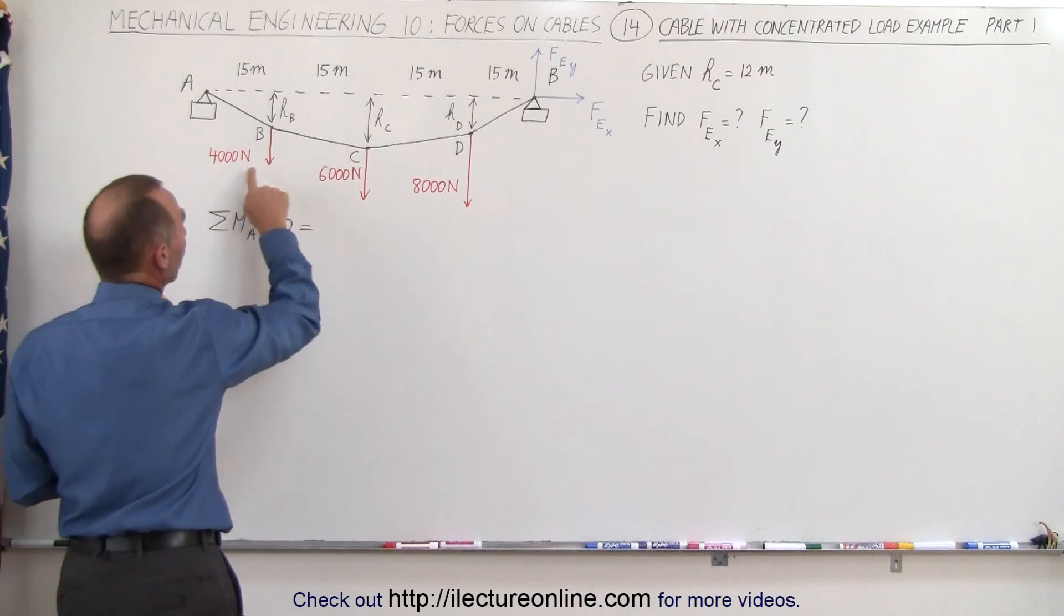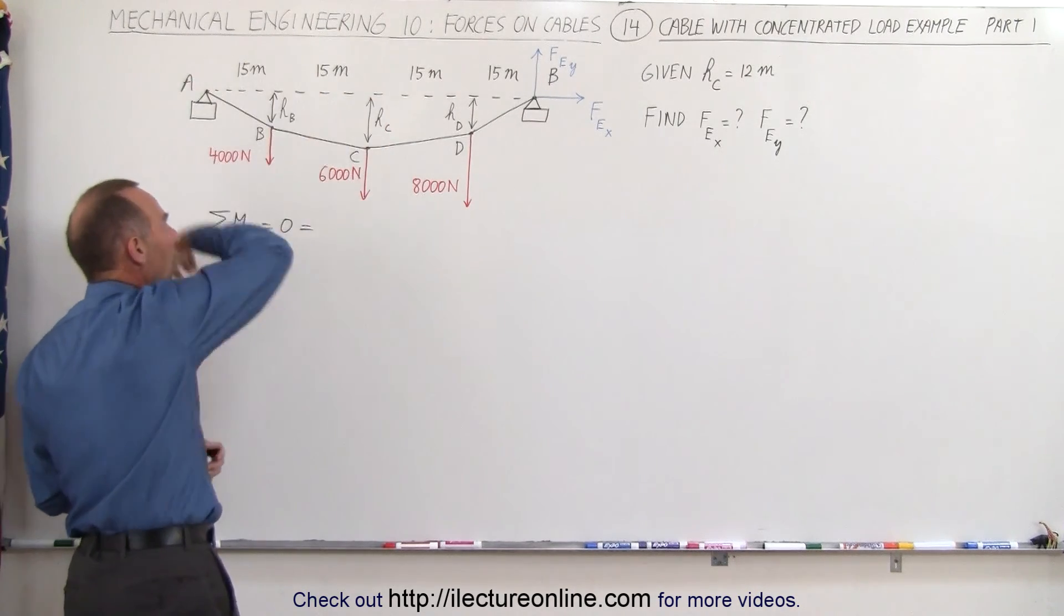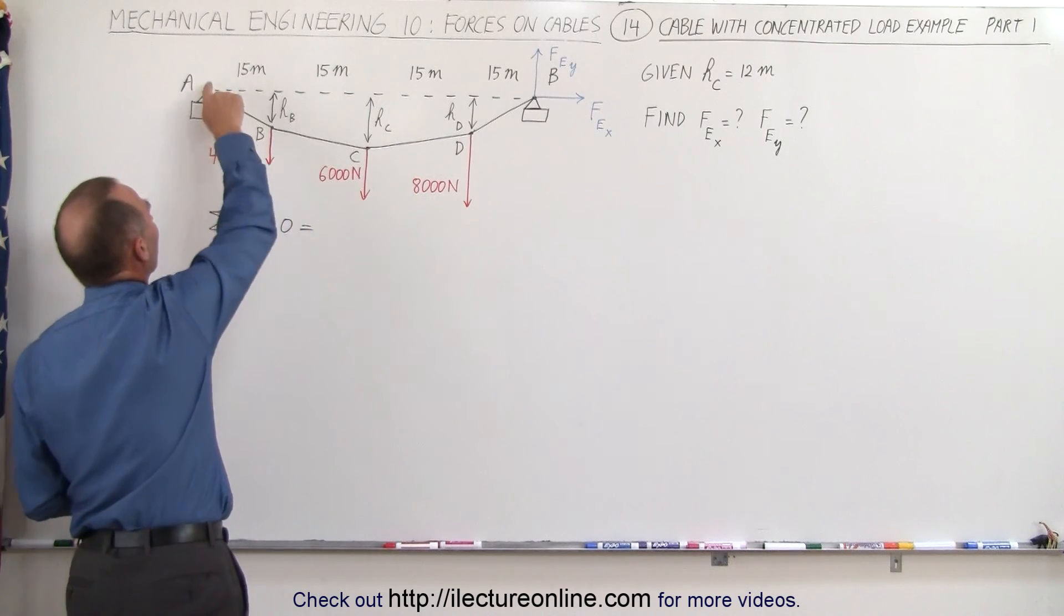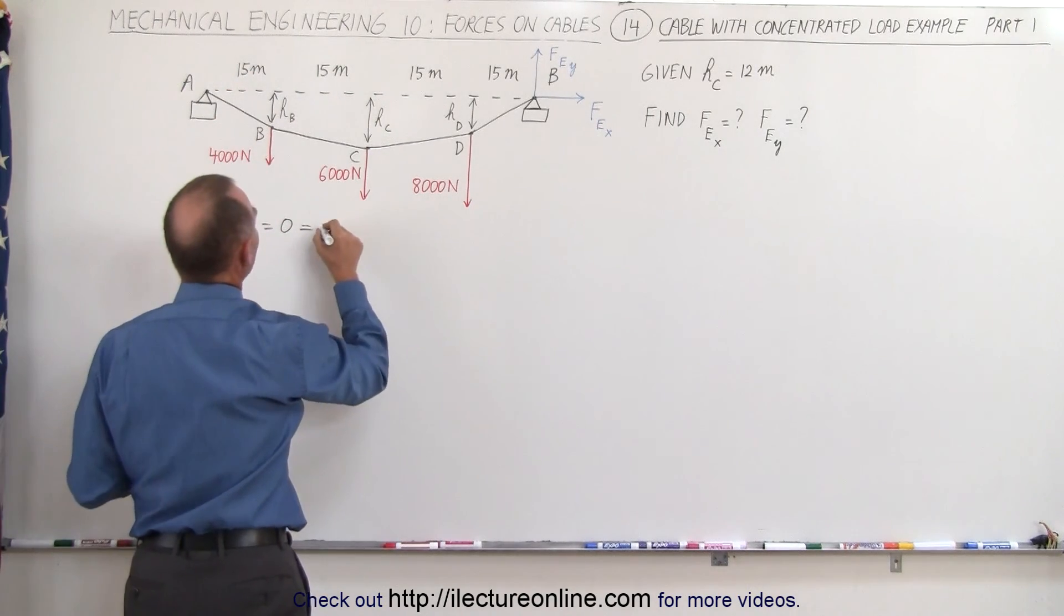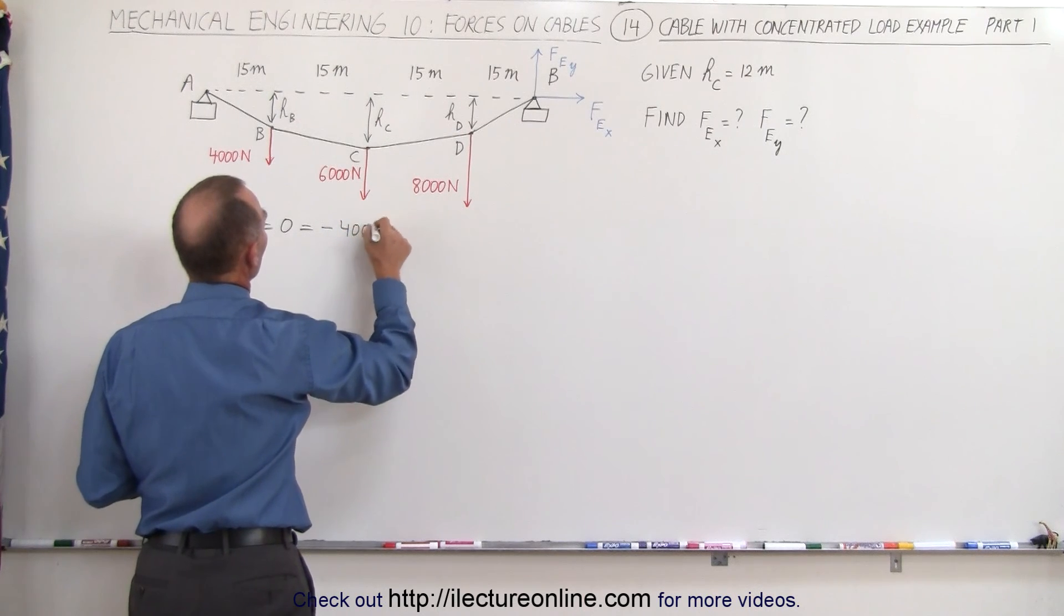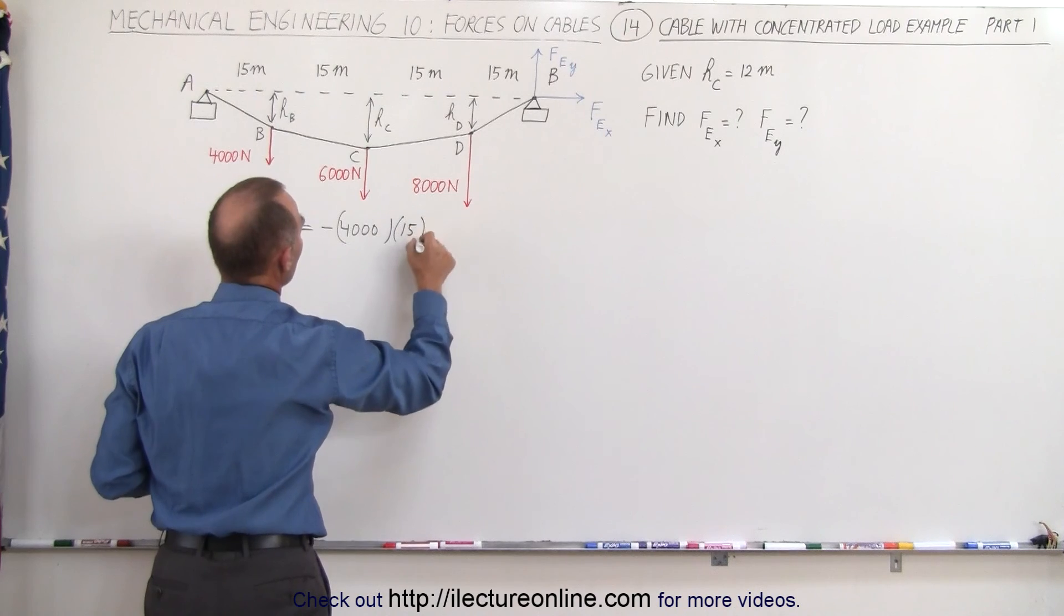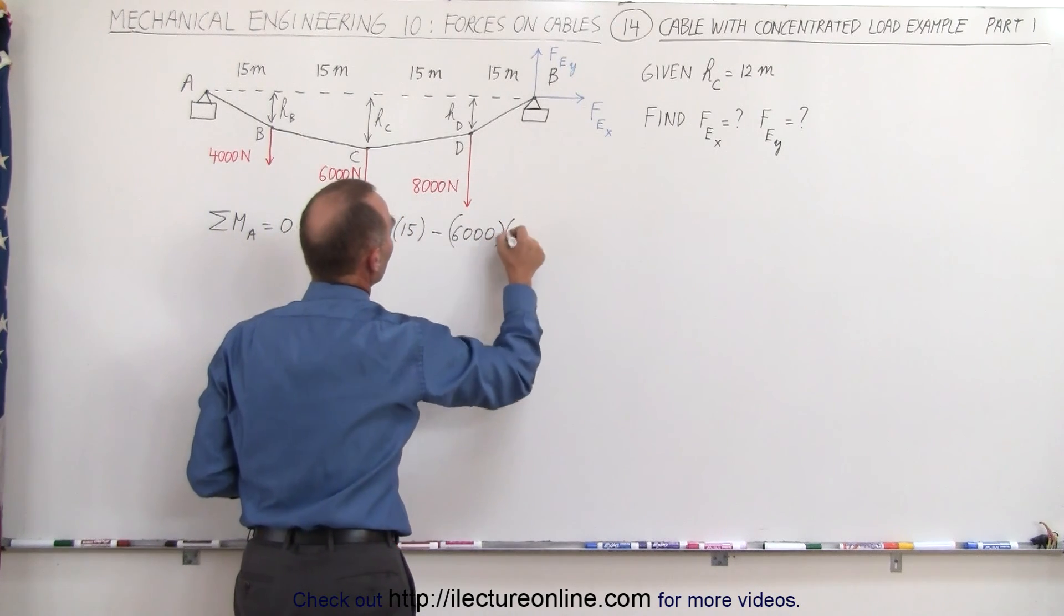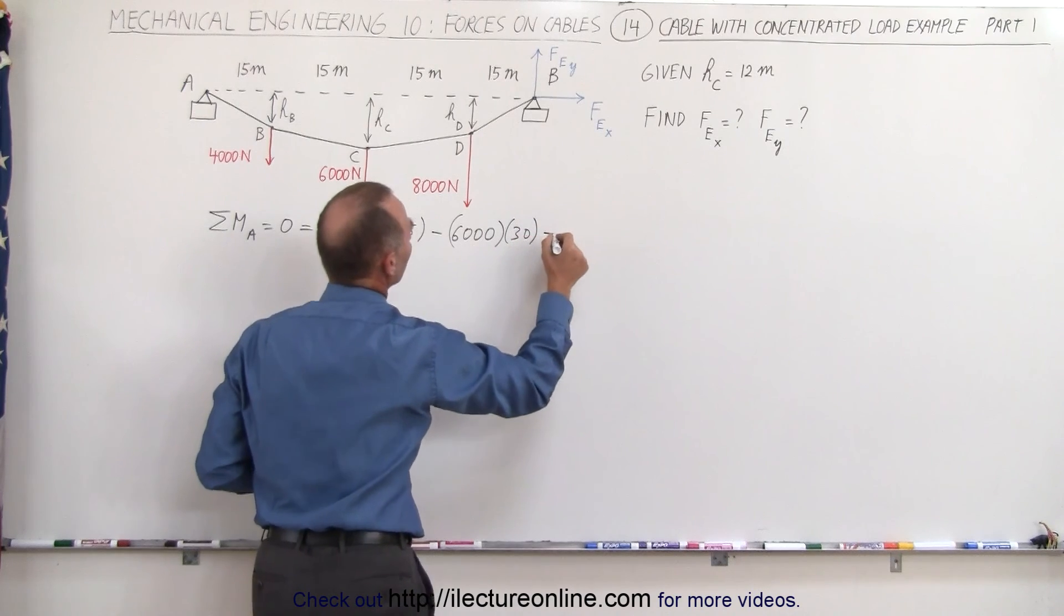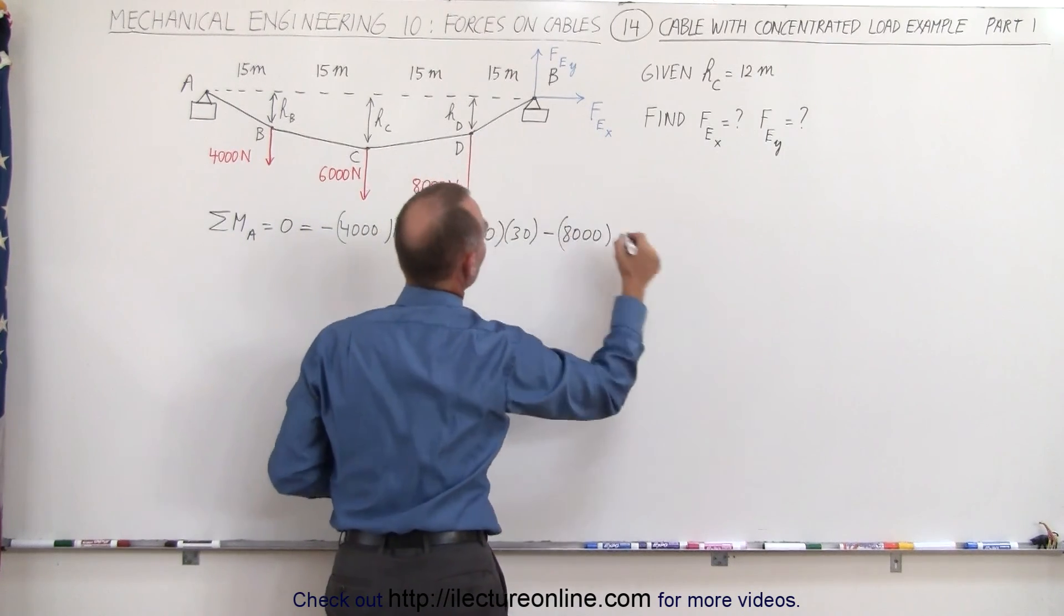First of all, the three loads—4,000, 6,000, 8,000 newtons—will cause a clockwise torque about point A, which means these are going to be negative moments. So minus 4,000 times the 15 meters, minus 6,000 times 30 meters, and minus 8,000 times that would be 45 meters.